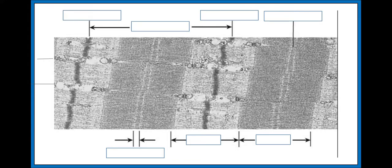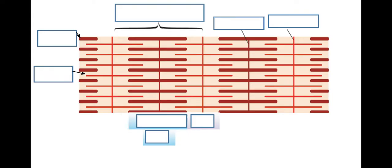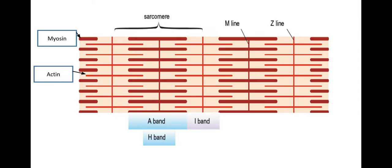You also need to be able to label an image like this. We have the Z lines on either side of the sarcomere and the M line in the middle — that is one sarcomere. You need to be able to label this from a microscope image. We have the H zone shown in the middle, the I band, the A band, and that full structure is a myofibril. Here's a more cartoon-style image showing how that is labeled, but again you do need to be able to do this.